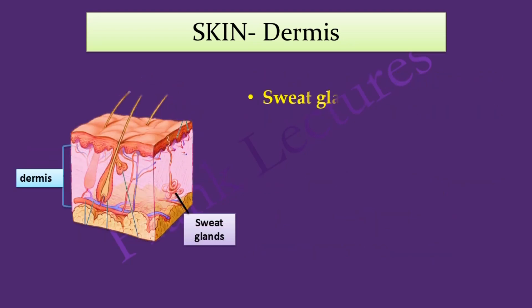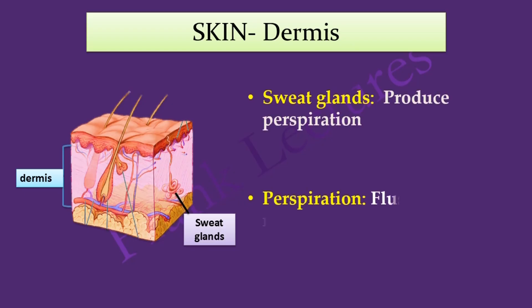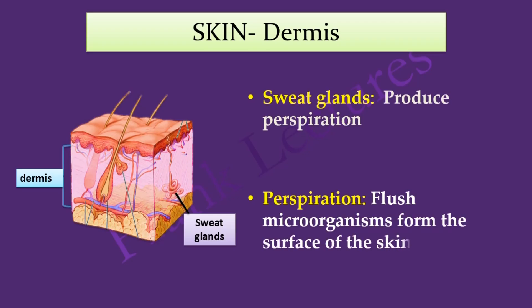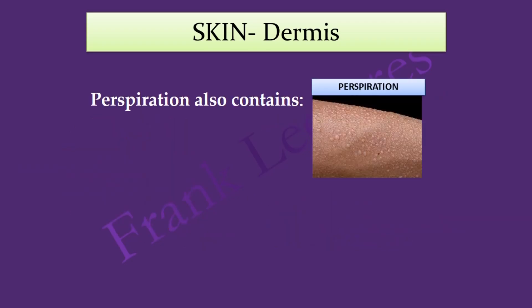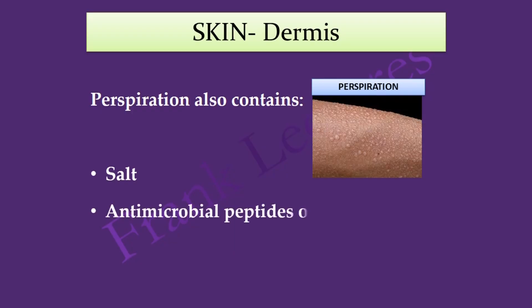The dermis also contains sweat glands which produce perspiration. Perspiration flushes microbes from the surface of the skin, and also contains salt, antimicrobial peptides, and lysozyme — all of which are antimicrobial in action. For example, salt by its osmotic action withdraws water from bacteria or microbes, inhibiting their growth and killing them. Lysozyme is bactericidal in action, as it breaks down bacterial cell walls by attacking the peptidoglycan.